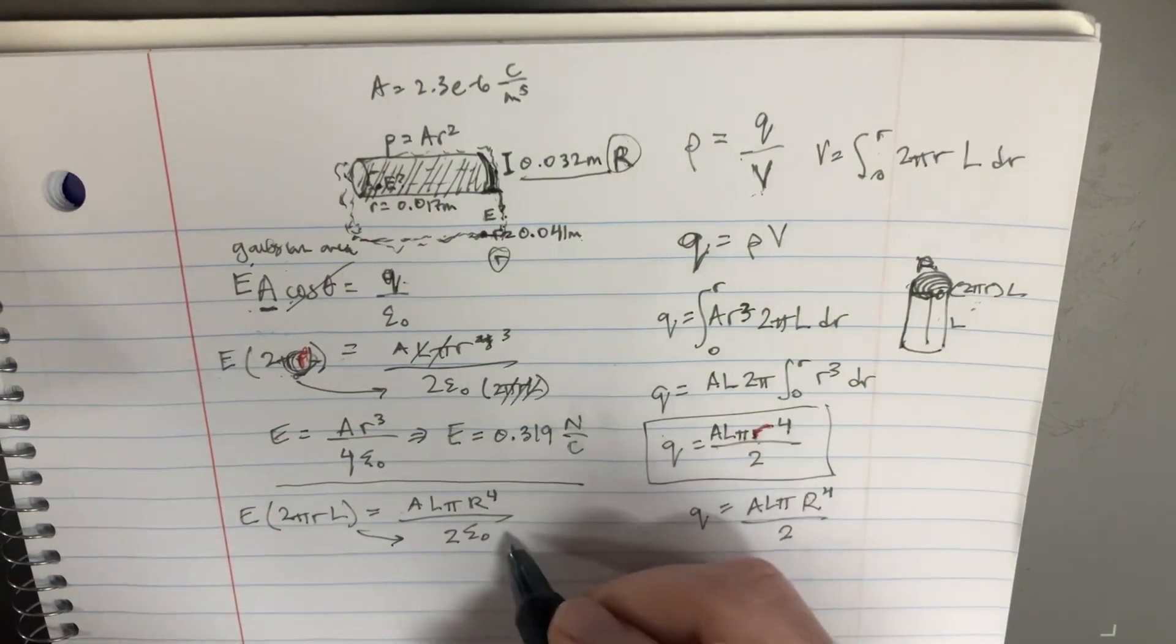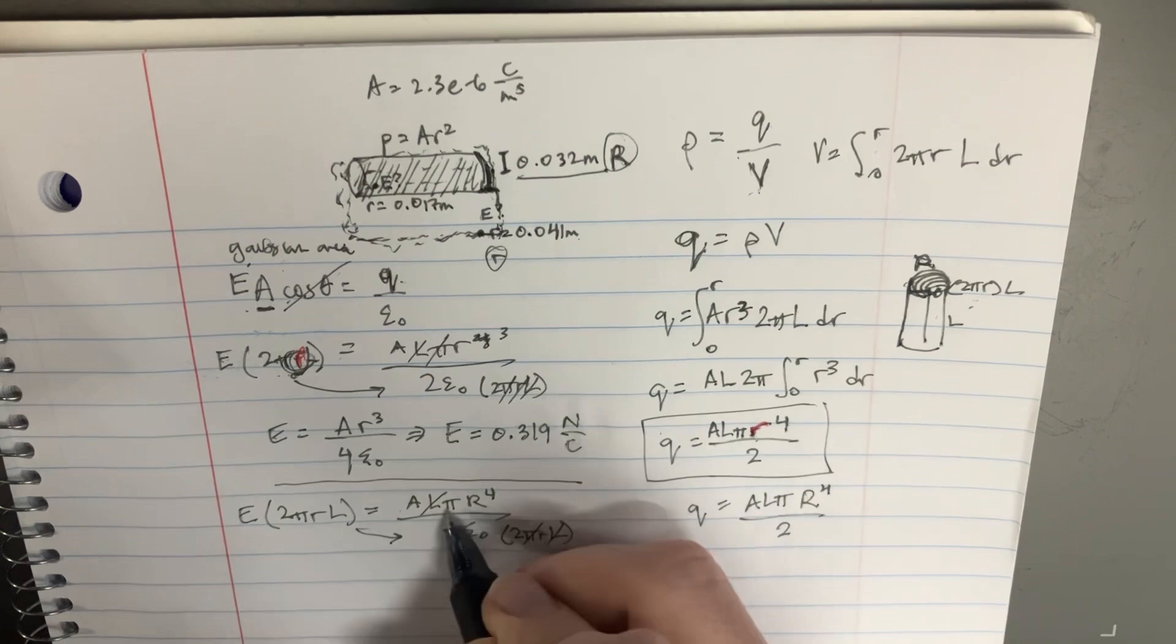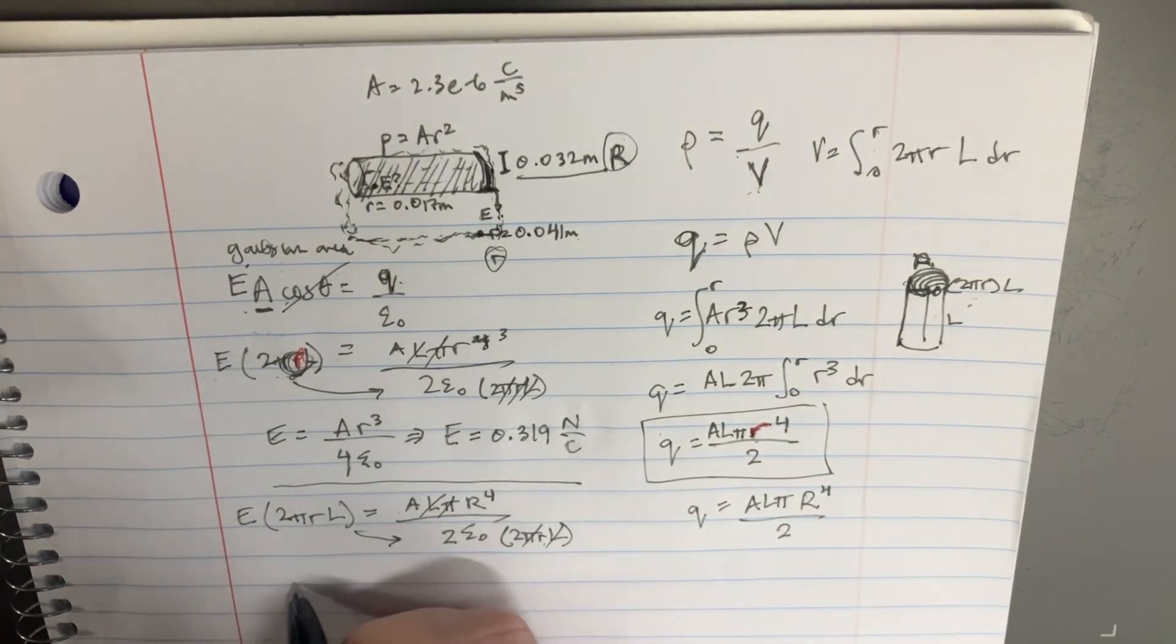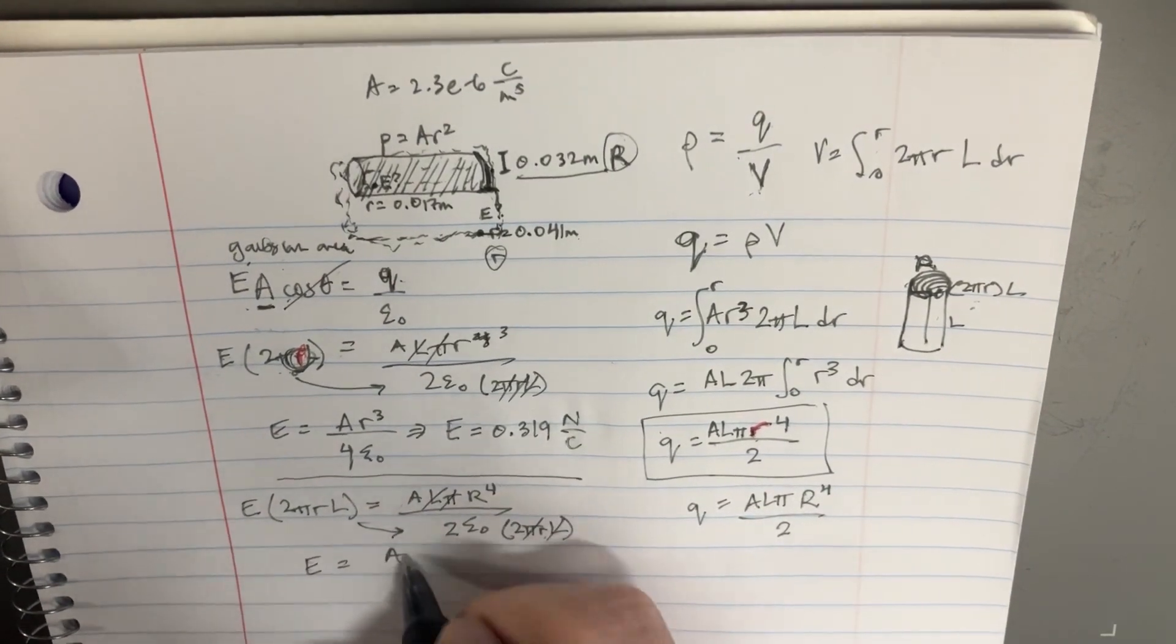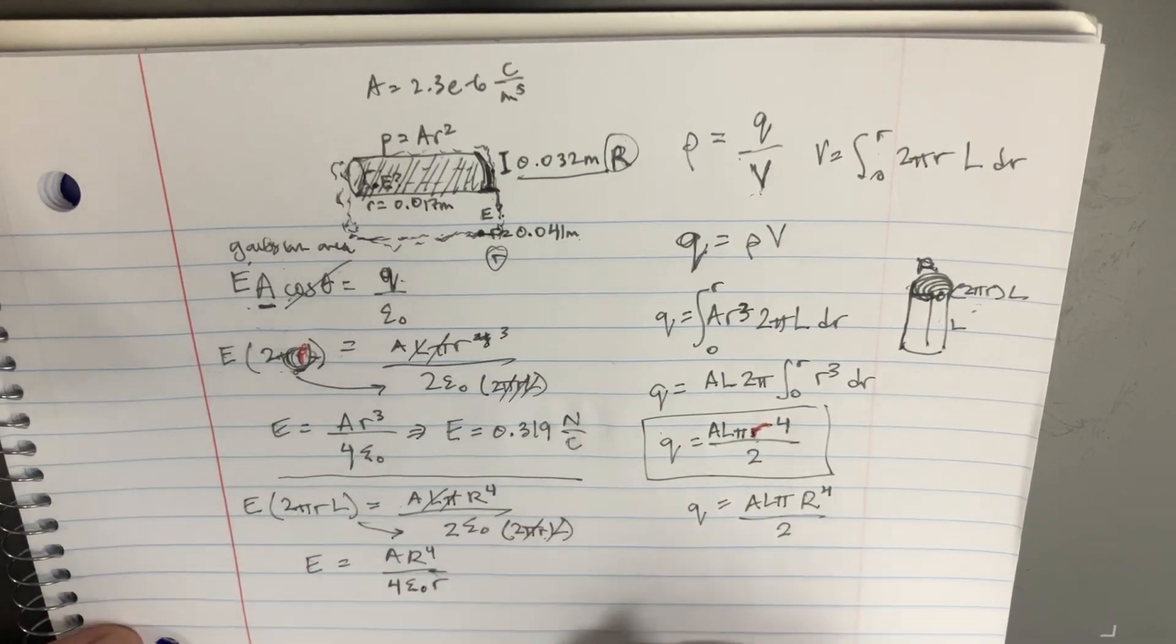So we'll put this on the other side, the 2πrL. This will go away. This will go away. And we're left with E equals A, capital R to the four, divided by four epsilon naught, and then small r.